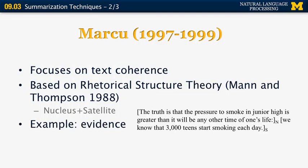An example relation type is 'evidence'. We have a nucleus followed by a satellite. The nucleus here is 'the truth is that the pressure to smoke in junior high is greater than it will be at any other time of one's life' — that's the claim. And the satellite is '3,000 teens start smoking each day.' You can easily see that the nucleus contains the more important information that cannot be omitted in a summary, whereas the satellite is optional. Based on this framework, Marcu built his rhetorical parser and used it for text summarization.